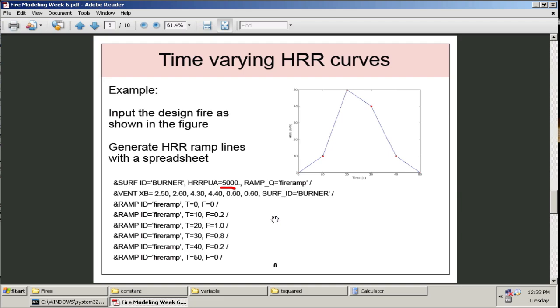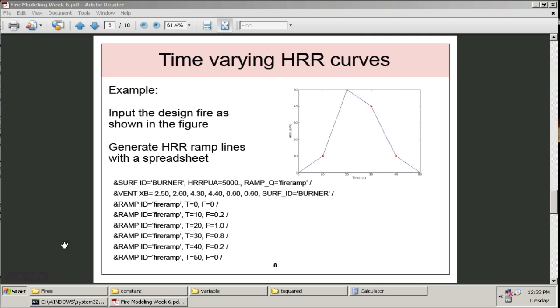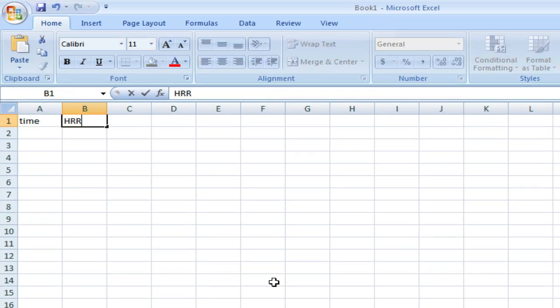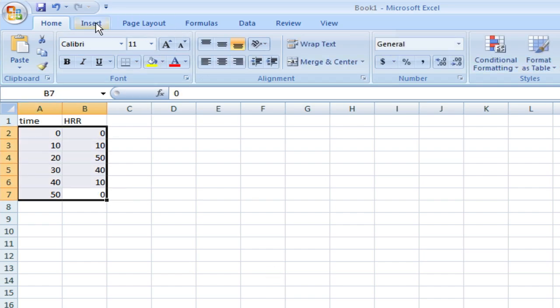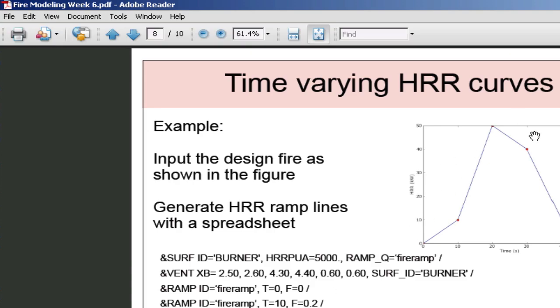If I open up Excel, I'll show you how you can generate these fraction values fairly easily. And we'll put them into the room fire case. So, if I open up Excel, the first thing I want to do is have a column for the time and heat release rate, and this represents my input design fire. So, if I have times 0, 10, 20, 30, 40, and 50, and the corresponding heat release rates I've chosen are 0, 10, 50, 40, 10, and 0. If I make a simple plot of this heat release rate design curve, I'll see something similar to the design curve that was on the slide here.